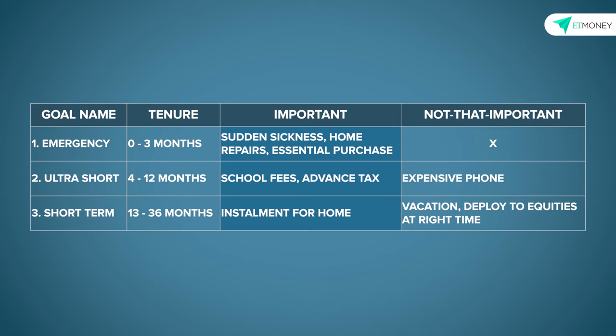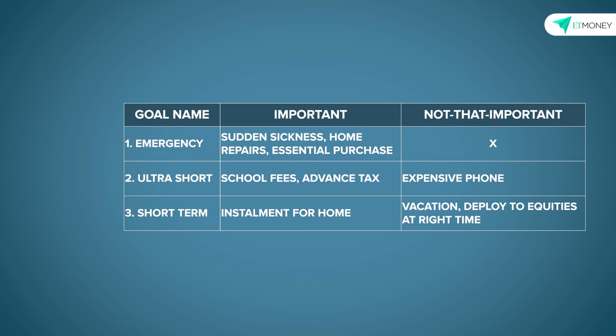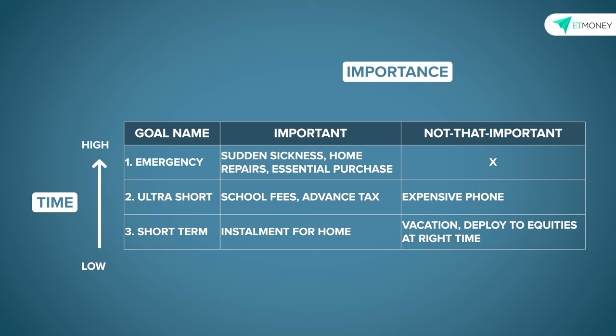Once that is done, it is necessary to apply a layer of importance on top of each goal. Goals like an emergency fund, school fees, loan instalment, etc. are rather important. On the other hand, a vacation or an expensive phone can wait and hence are not that important goals. When planning, the segmentation between time and importance can be really useful and as a thumb rule, the closer you are to your goals and the more important that these goals are, the higher should be your allocation to those instruments which are not going to give you a nasty surprise.